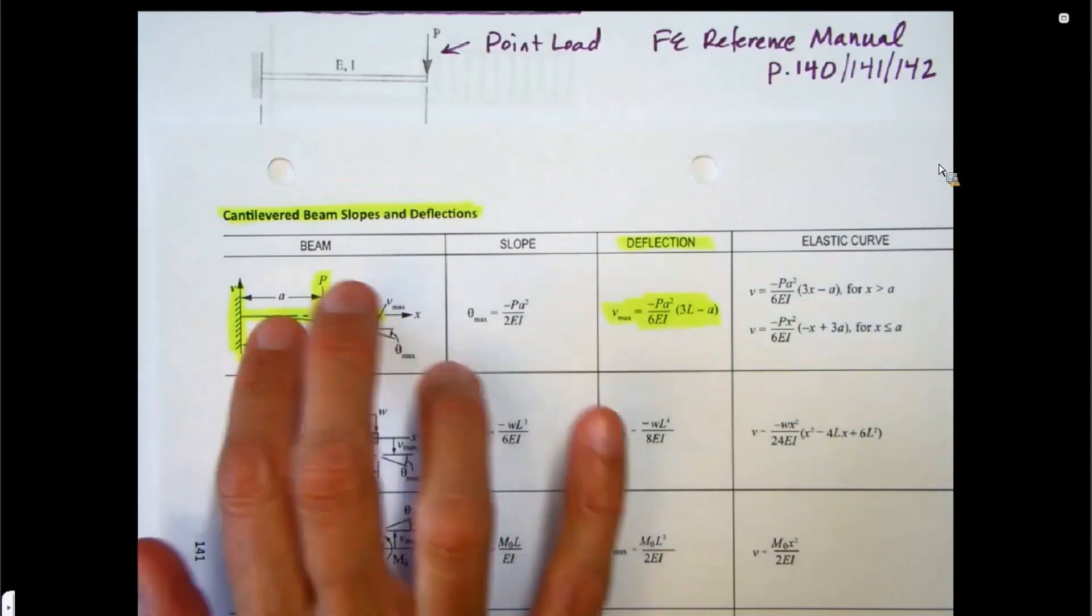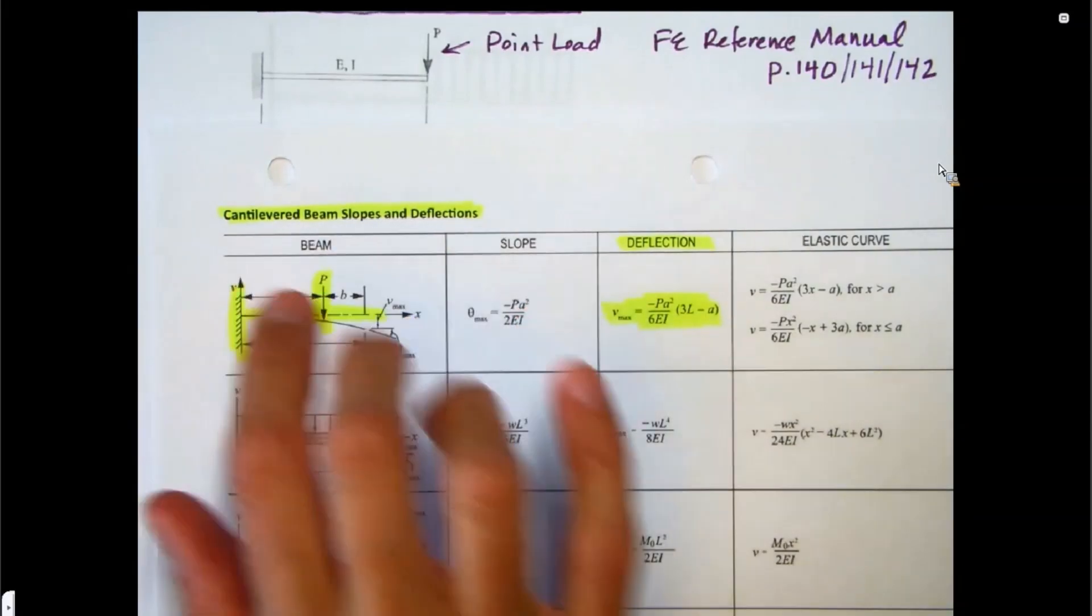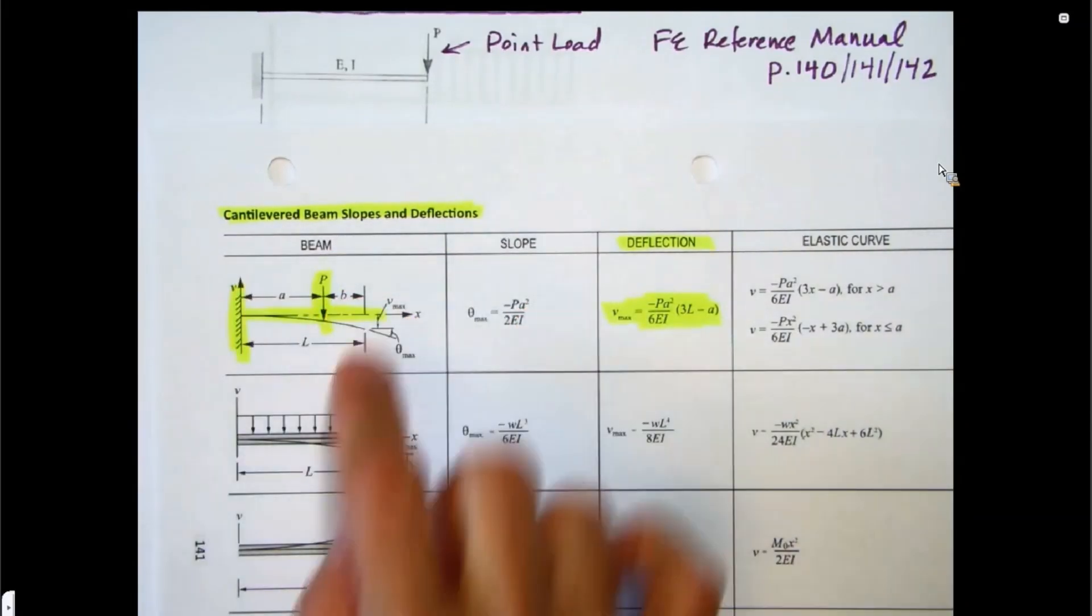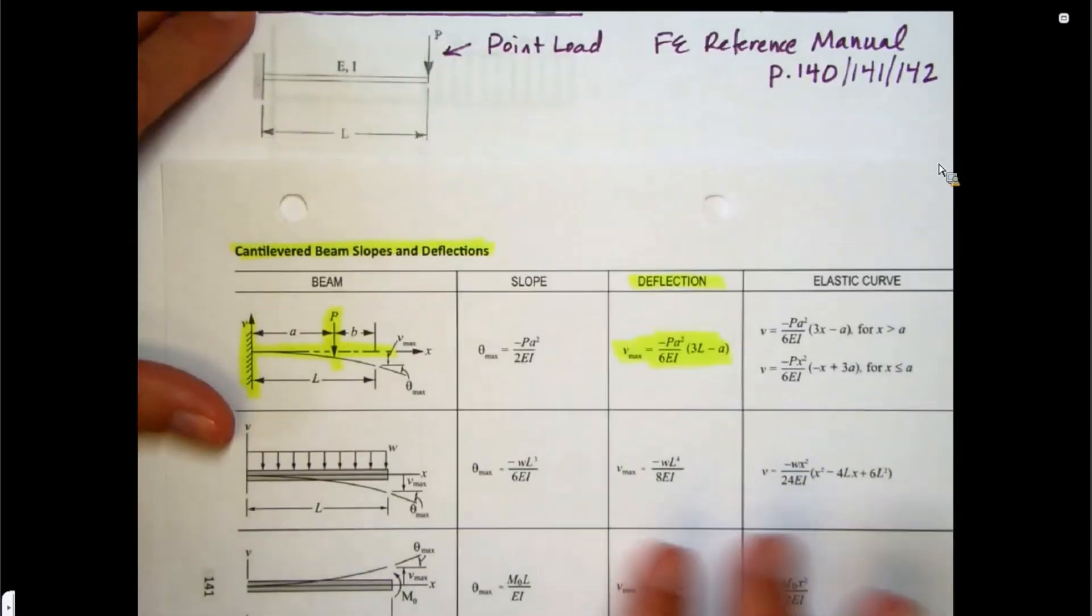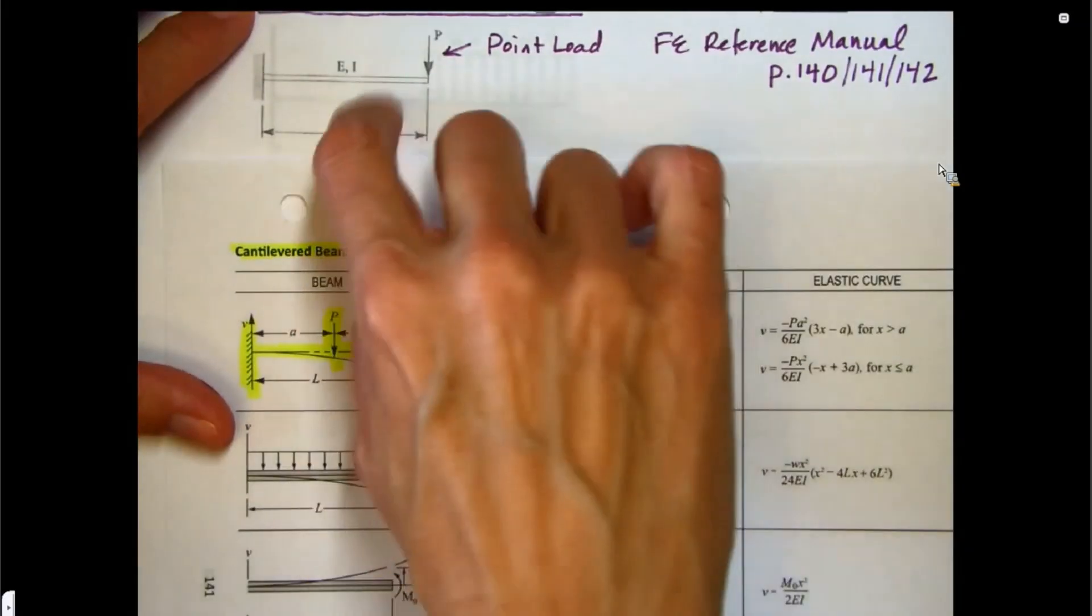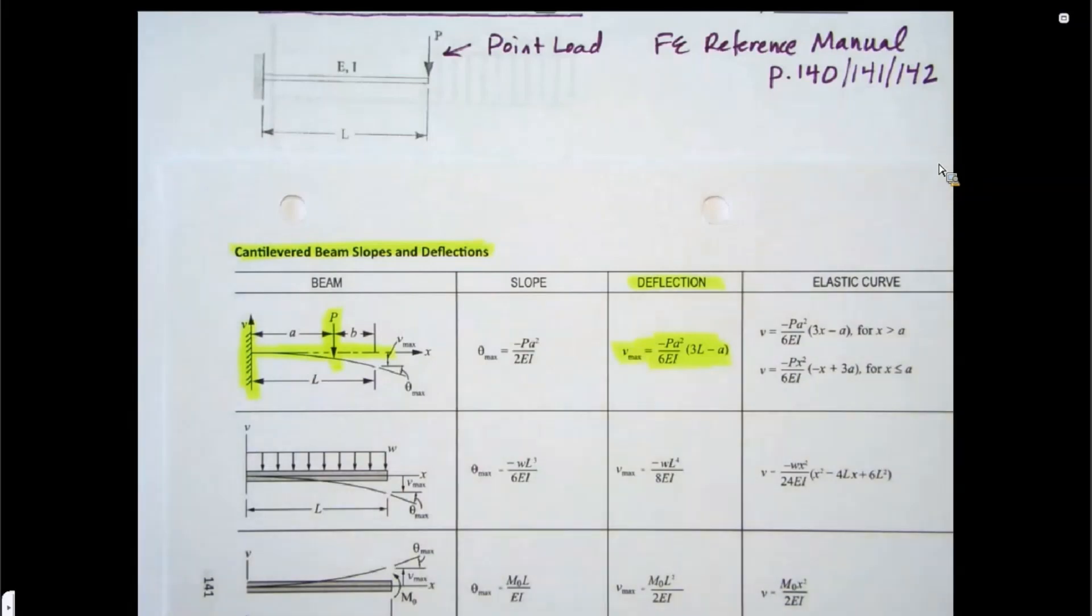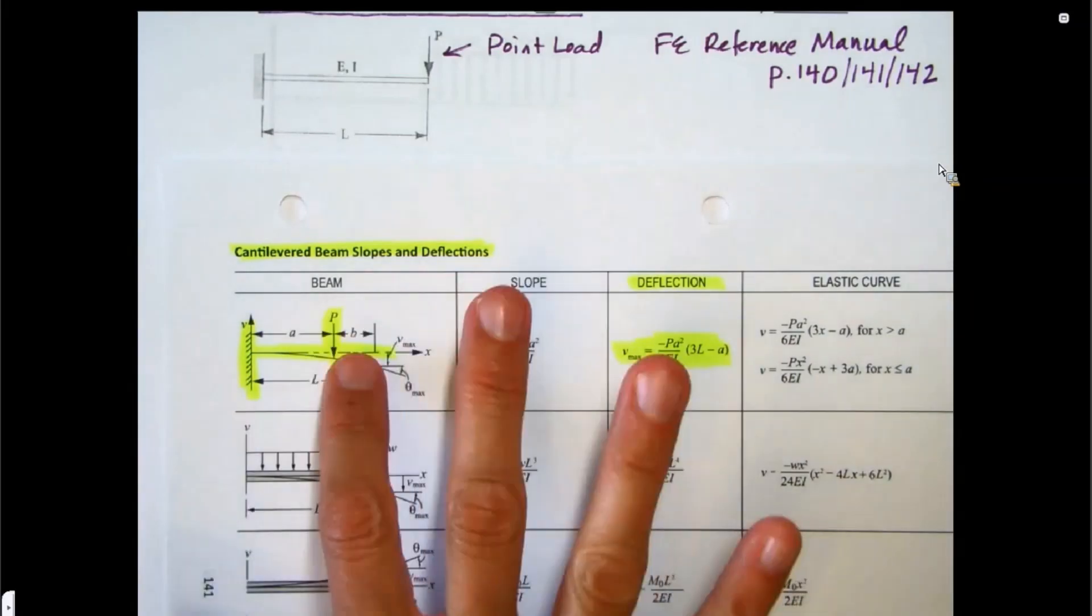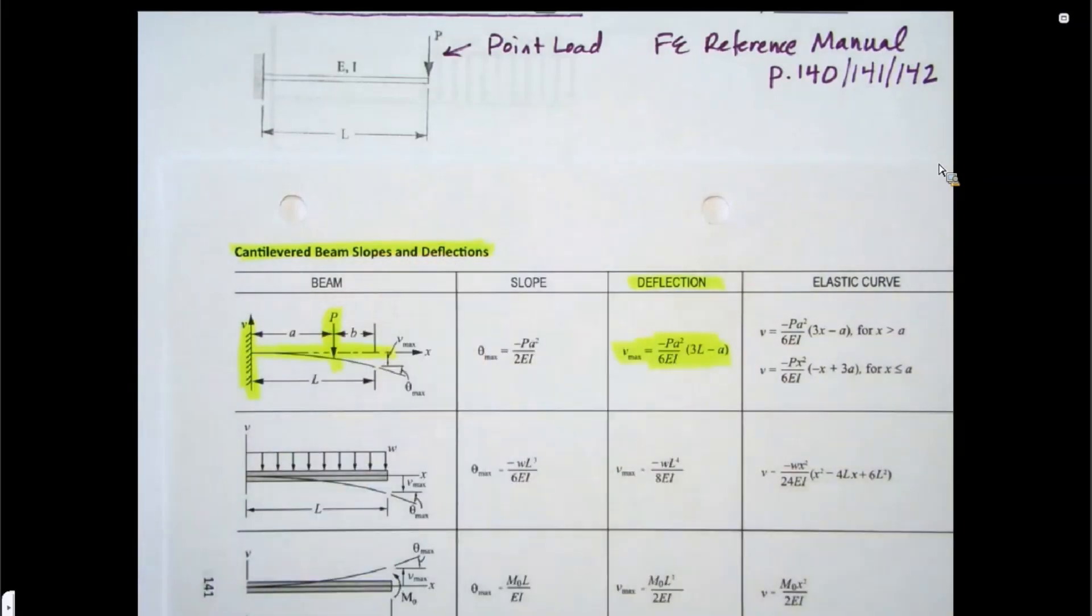That's okay because we're given these dimensions A and B, so we could just say, well, B is just equal to zero, right? And in this case, A would be equal to L. A is equal to the length of the beam. So that's okay if the point load's not exactly where you need it to be with those A and B.